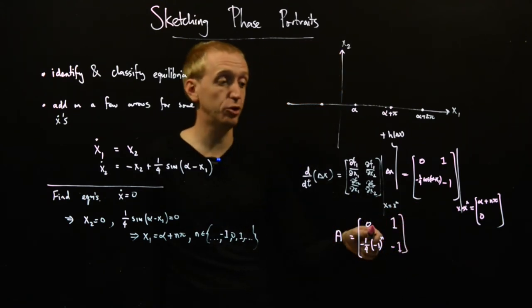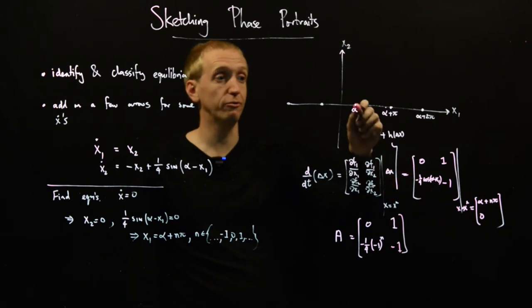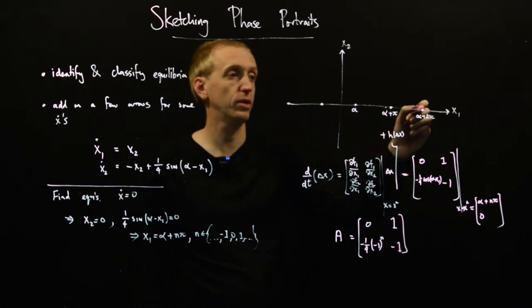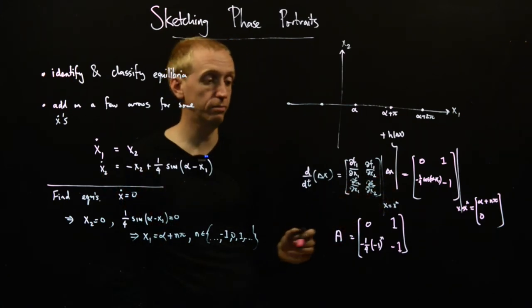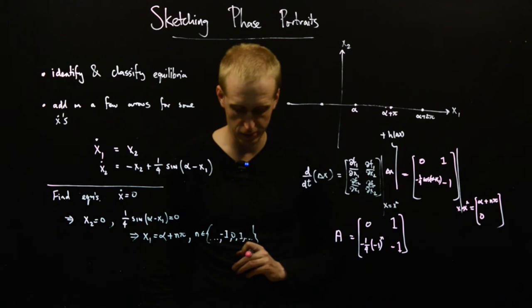So we've found our linearization, and in fact, in one fell swoop, we will be able to find the linearization around this one, this one, this one. And all of our equilibrium points in one go. And so now we just need to understand what's going on here.